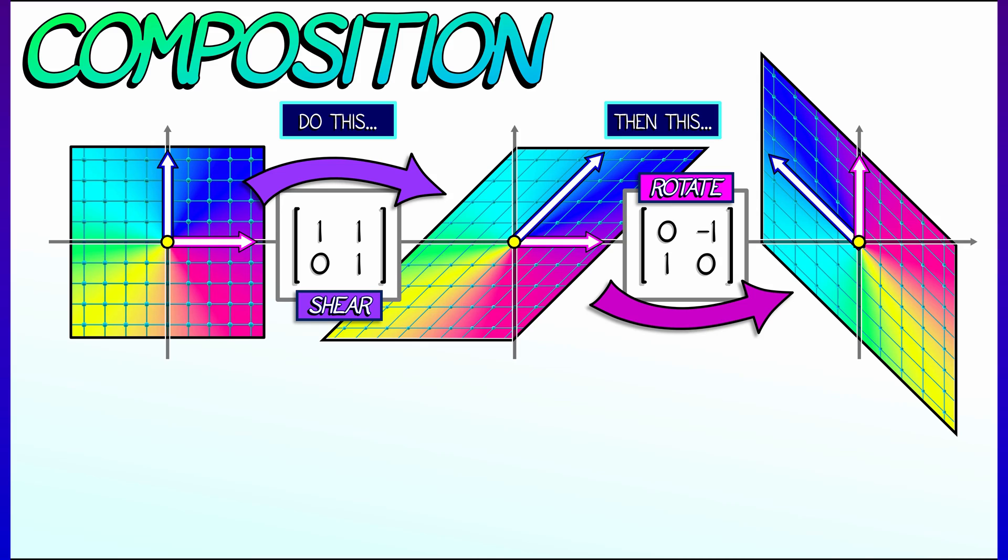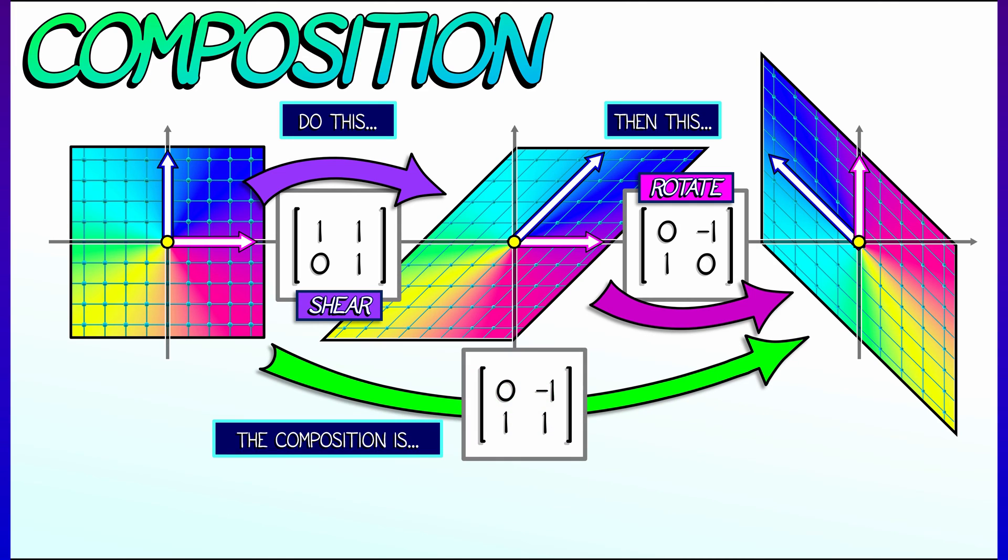Now, what I want to do is think about what happens when you do first the shear, then the rotation. What linear transformation goes from the beginning to the end, doing both of those things at once? Well, of course, we just follow the basis vectors, right?